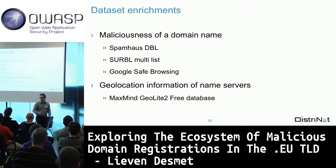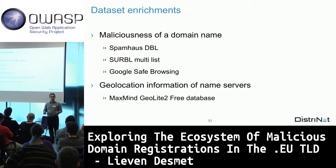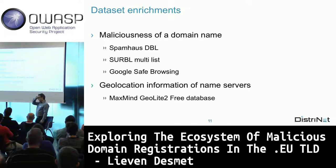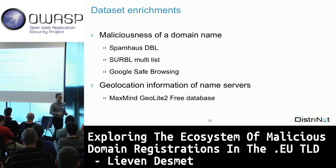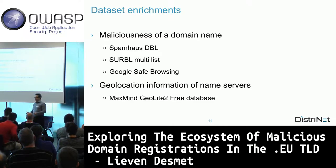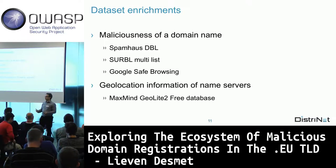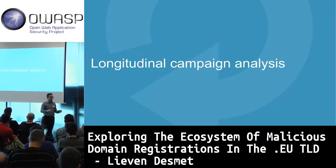We enriched the dataset in two ways. First, to identify malicious domains we used three blacklist sources: Spamhaus, SURBL, and Google Safe Browsing, queried daily for 13 days then weekly until six months after registration. Second, we used the MaxMind free database to get geolocation of nameservers at the time of registration. Now we have all the components and know what we want to search for in the longitudinal analysis.